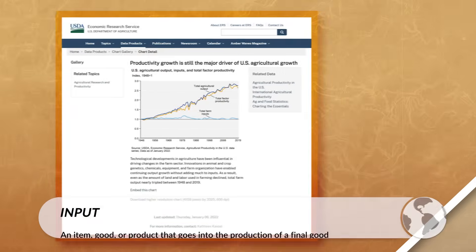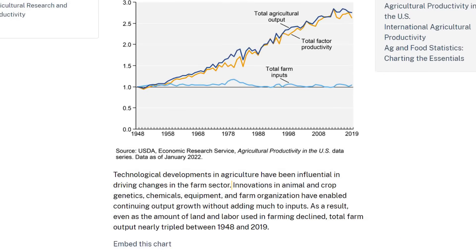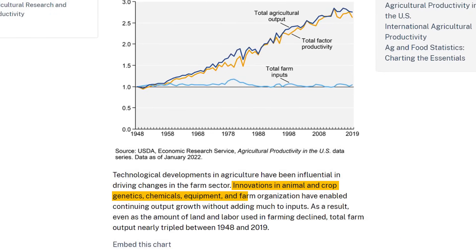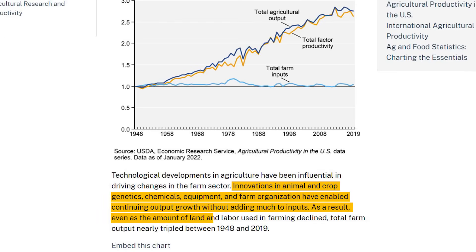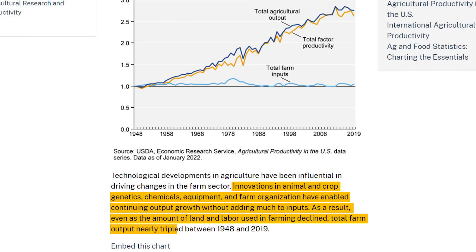The Department of Agriculture states that this is due to innovations in animal and crop genetics, chemicals, equipment, and farm organization, which have enabled continuing output growth without adding much to input. As a result, even as the amount of land and labor used in farming declined, total farm output nearly tripled between 1948 and 2019. So we can see the impact that technology has had on how we produce our food and how our agriculture is organized.